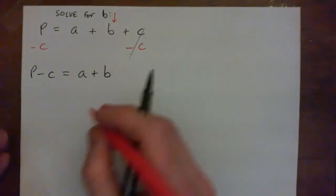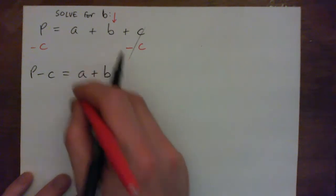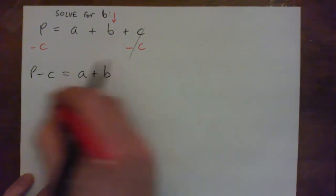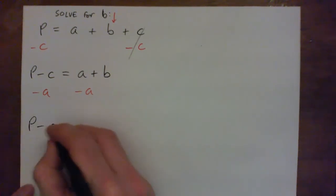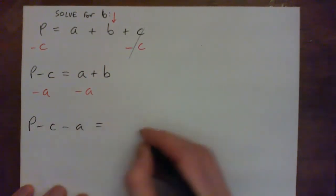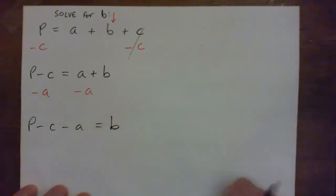So I still don't have B on its own. A is being added to it. So now I'm going to subtract A from both sides. And I get P minus C minus A equals B. And so now we have B on its own.